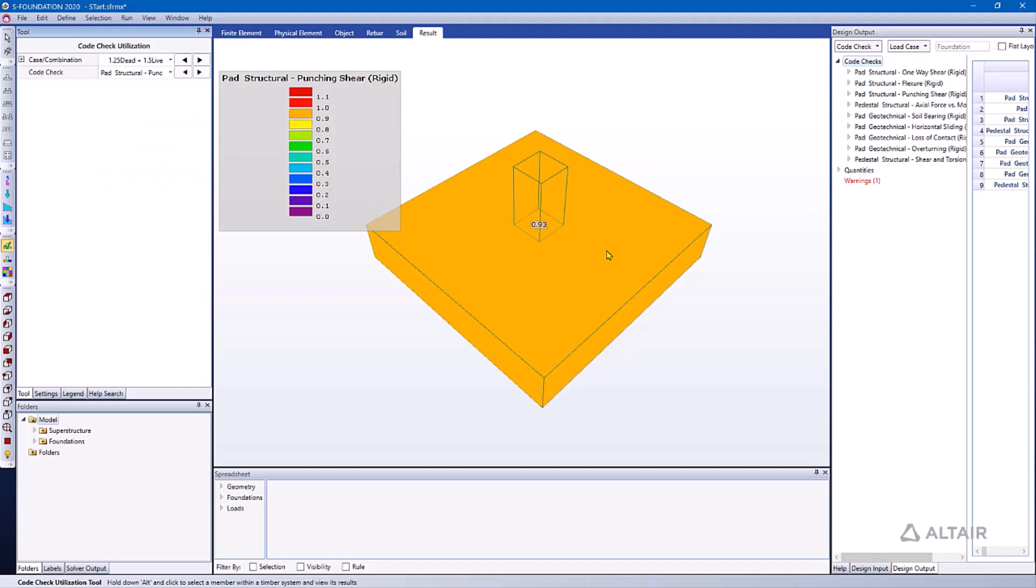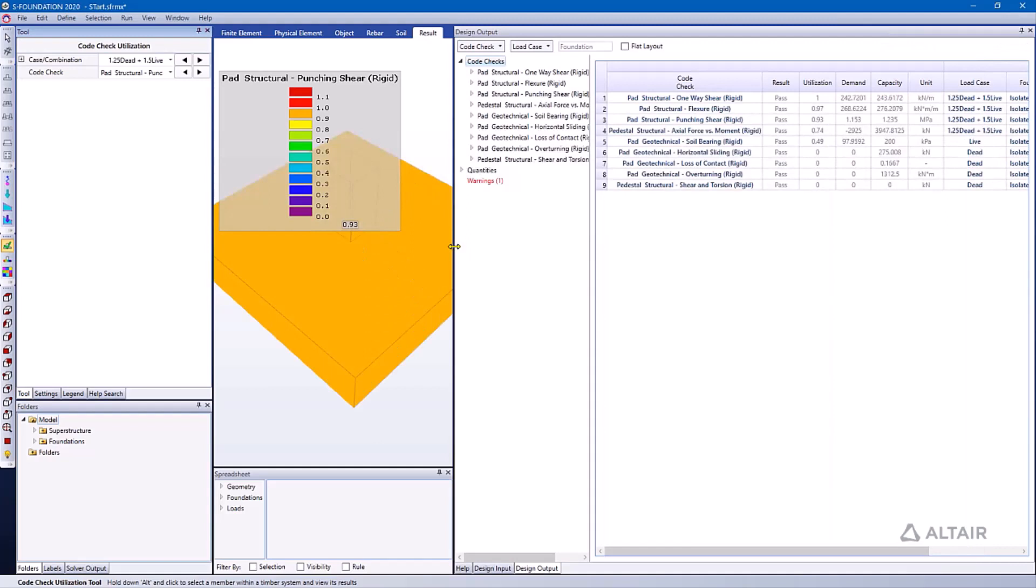And I can see the utilization ratio is 0.93. Now I can expand the details of the code check if I expand this option on the right-hand side. If we had multiple monitors, we could actually show this on two different monitors so we wouldn't have to expand and contract. But here I can see a pad punching shear here. It's giving me utilization of 0.93. My demand is 1.153. And my capacity is 1.235. So those numbers should look pretty familiar to us.